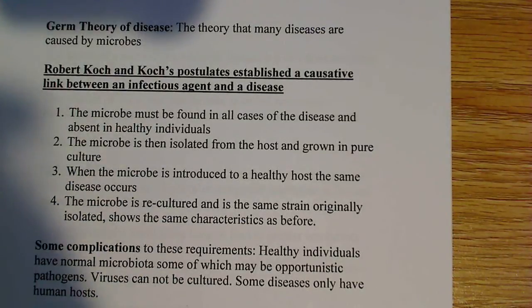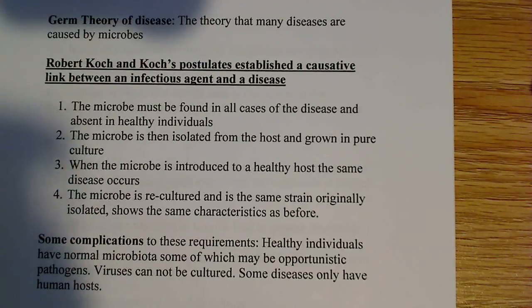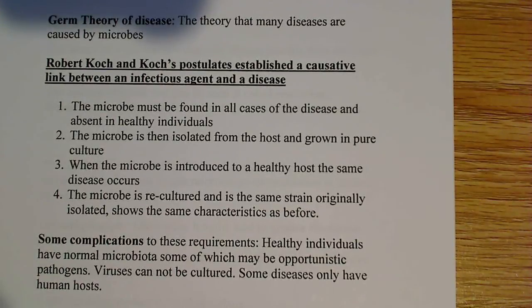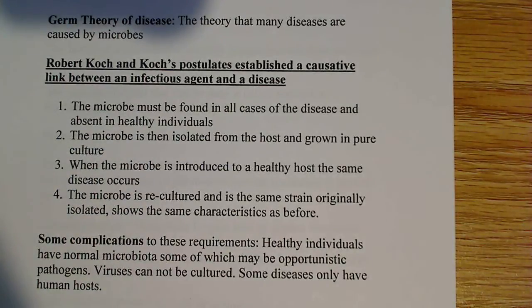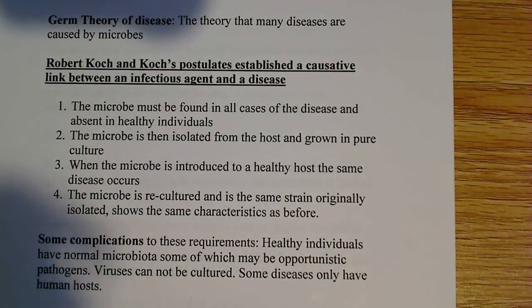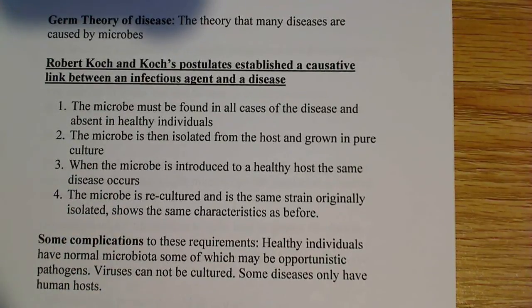He came up with four postulates — though I want to make clear they don't always apply, because there are disease-causing agents that don't fit this process. His first observation was that if you had a sick animal, the microbe had to be found in all infected individuals but not found in healthy individuals. So if you extracted blood and found some microbe in a sick animal, but didn't find it in a healthy animal, that became the first postulate.